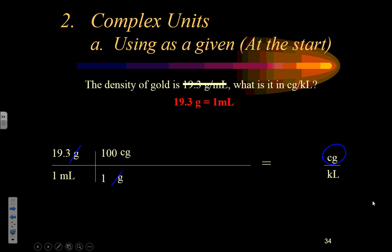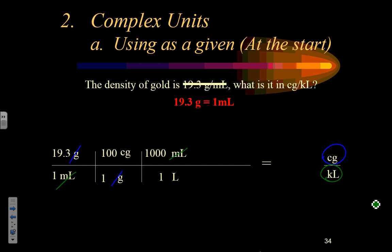Now I have to work on the denominator. I've got milliliters on the bottom, and my target says I need kiloliters on the bottom. Just like before: do I want milliliters? No. To get rid of something on the bottom, I write it on top to cancel. As a prefix unit, I can only change it into the base unit — liters. There are 1,000 milliliters in one liter. So now milliliters cancel, and I have liters on the bottom.